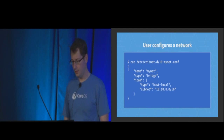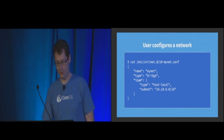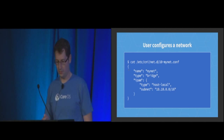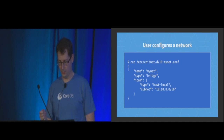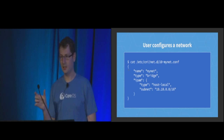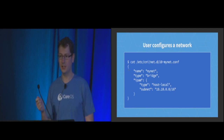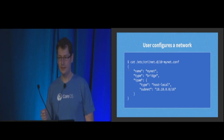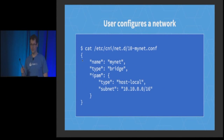Here's the JSON config. You can store it somewhere in the /etc directory. The name field is just a name for the network — it can be anything you want. The type, in this case bridge, is the type of plugin that's going to get invoked. Then there's the IPAM section, which stands for IP address management. It specifies that this network is going to use host-local — the mode with a fixed block. In this case, the block is 10.10.0.0/16, so containers will get 10.10.0.1, 10.10.0.2, and so on.